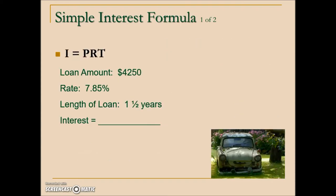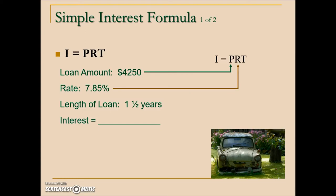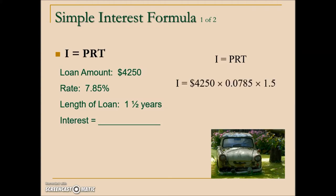In the first example, they give information about a loan and ask us to calculate the interest, so we use the simple interest formula where the loan amount is the principal, the rate is R converted to a decimal, and the length of the loan is T for time. Note: the percentage is converted into an equivalent decimal, and time is expressed in years — using the decimal equivalency instead of a fraction. After multiplying those three values together, the charge for this loan over a year and a half at the given rate is $500.44.